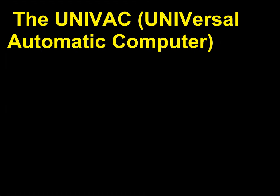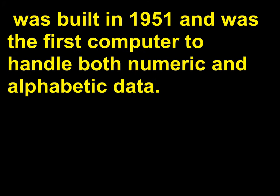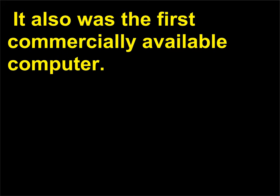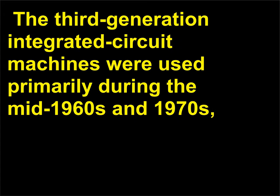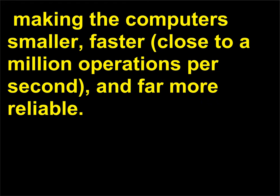The UNIVAC (Universal Automatic Computer) was built in 1951 and was the first computer to handle both numeric and alphabetic data. It also was the first commercially available computer. The third-generation integrated circuit machines were used primarily during the mid-1960s and 1970s, making computers smaller, faster — close to a million operations per second — and far more reliable.